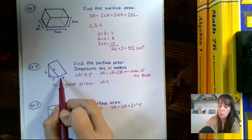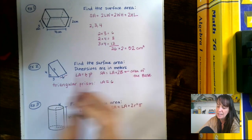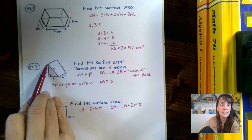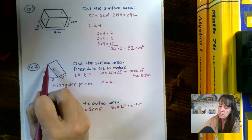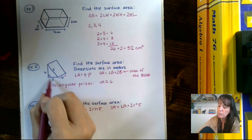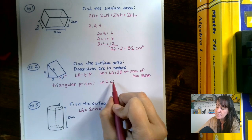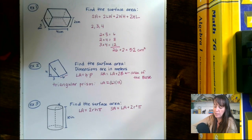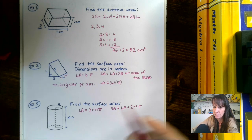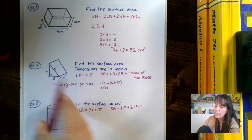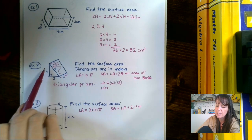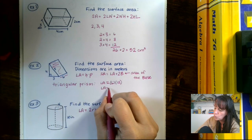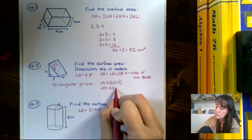Now that we've broken this prism down, let's find the lateral area — that's all the faces that do not include the bases, so we're not counting the two triangles. The way we find this is height times the perimeter of the base. Our height is 6, and the perimeter of the triangle is 4 plus 3 plus 5, which gives us 12. So 6 times 12 equals 72. Our lateral area is 72 meters squared.